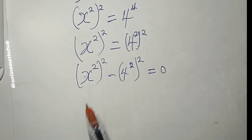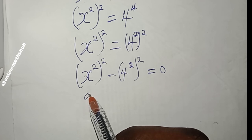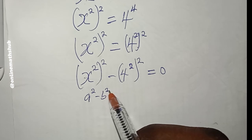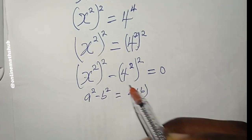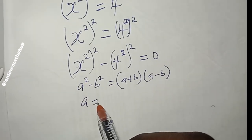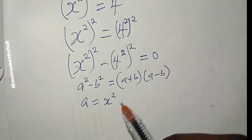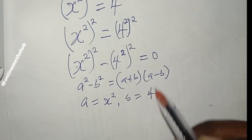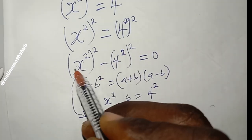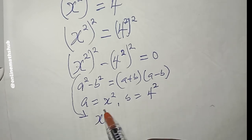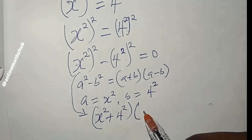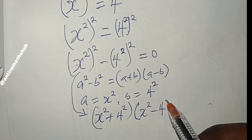Clearly, we have a difference of two squares. Recall that a squared minus b squared expands to (a + b)(a − b). In this case, our a is equal to x squared and our b is equal to 4 squared. So we can expand this as (x squared + 4 squared) multiplied by (x squared − 4 squared).